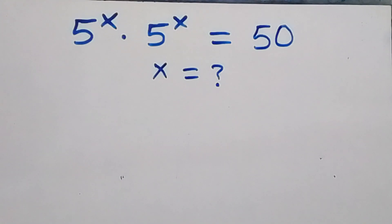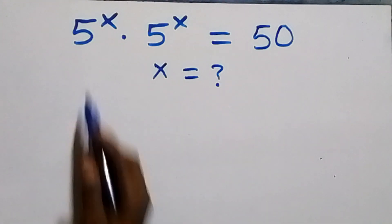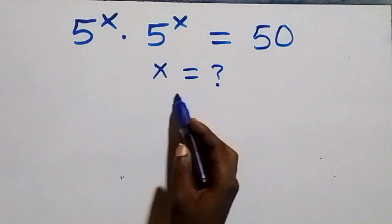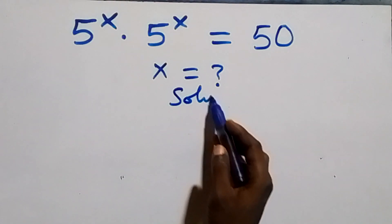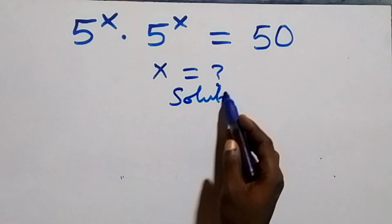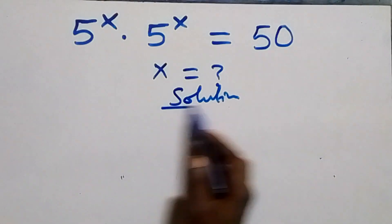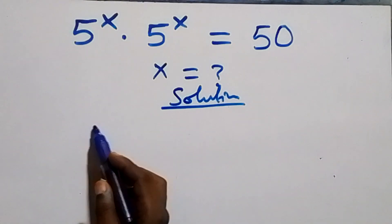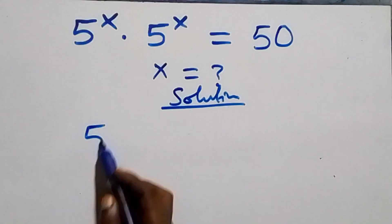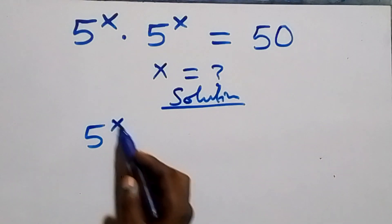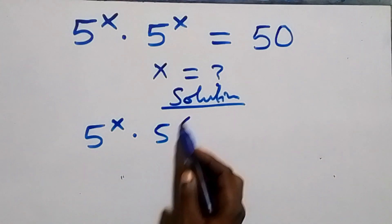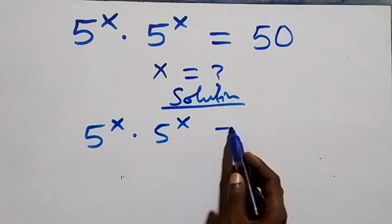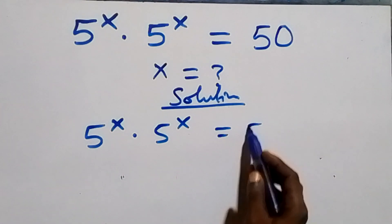Hello, you are welcome. How to solve this nice exponential equation. What we have here is 5 raised to power x times 5 raised to power x equals to 50.